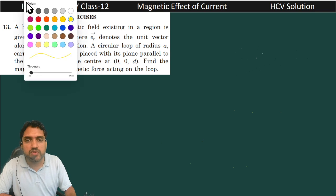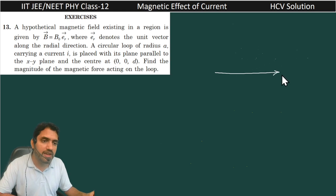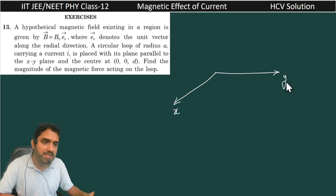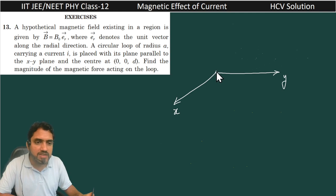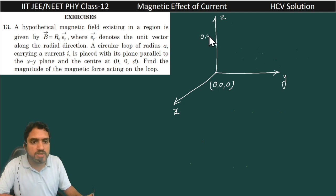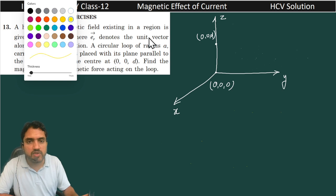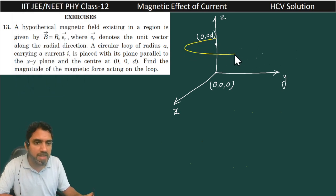In this question we are considering one coordinate system having X axis, Y axis, and Z axis. This Z axis we are considering as vertically upward. This is the origin (0, 0, 0). Now let us consider the point (0, 0, D) as the center of the circular loop, and this circular loop is in the XY plane.